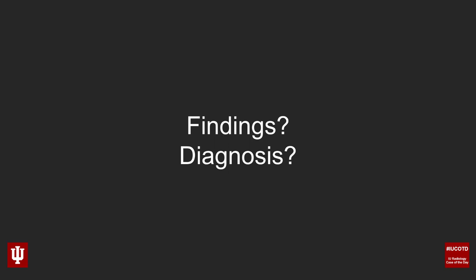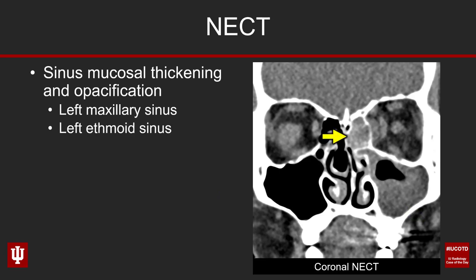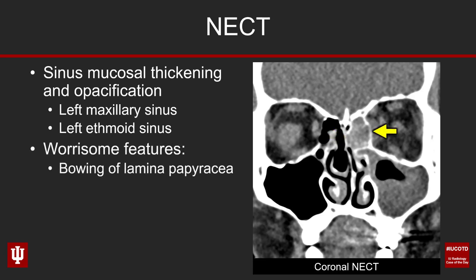Okay, so what are the findings and what's the diagnosis here? Starting with the coronal non-contrast CT, what should be readily apparent is we have areas of sinus mucosal thickening and opacification involving our left maxillary sinus, denoted by the yellow arrow, as well as our left ethmoid sinus. There's sinus opacification, which is not normal, but there's more to the story. There are other features that make this more worrisome than just run-of-the-mill sinus mucosal disease.